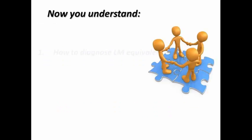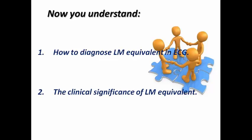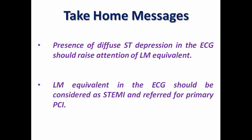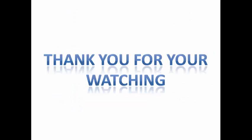At the end of this lecture, we have learned how to diagnose left main equivalent in ECG and its clinical significance. Presence of diffuse ST depression on ECG should raise suspicion of left main equivalent — check V1 and AVR for ST elevation. If present, consider the patient as STEMI. Left main equivalent is considered a STEMI equivalent and should be referred for primary PCI, not managed as non-ST elevation acute coronary syndrome with CCU admission and early invasive strategy alone. Thank you very much for watching.